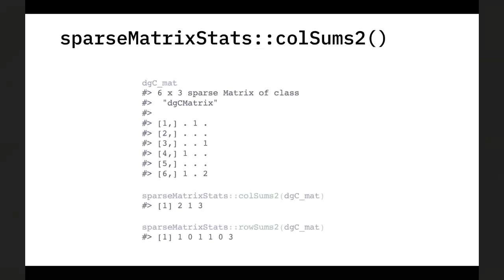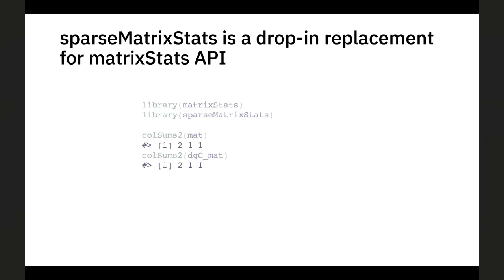The idea behind sparseMatrixStats is pretty straightforward: you take the DGC matrix object, call the colSums function, and you get the same results as previously with the Matrix package. The hope is that you don't even need to think about whether you have a dense or sparse matrix — you just call the same functions and get exactly the same results. The idea is that sparseMatrixStats really functions as a drop-in replacement for matrixStats, so you can use both in your own package and it doesn't matter if your input is sparse or dense.